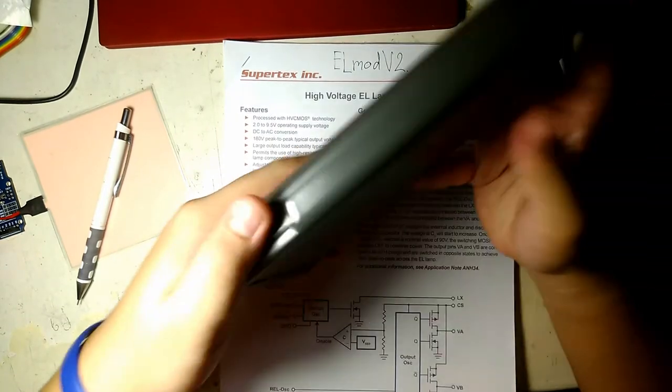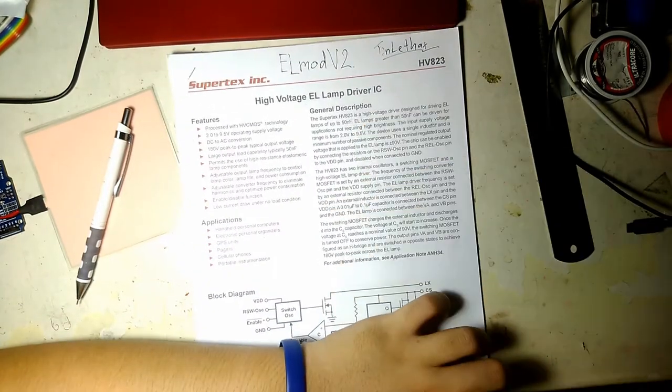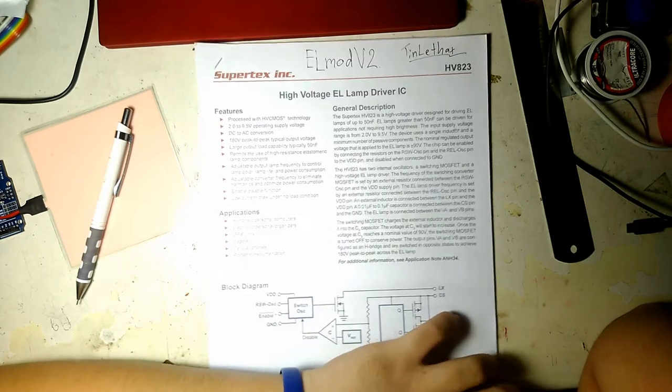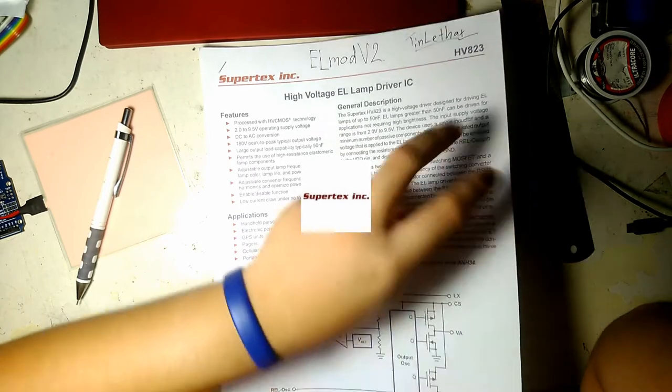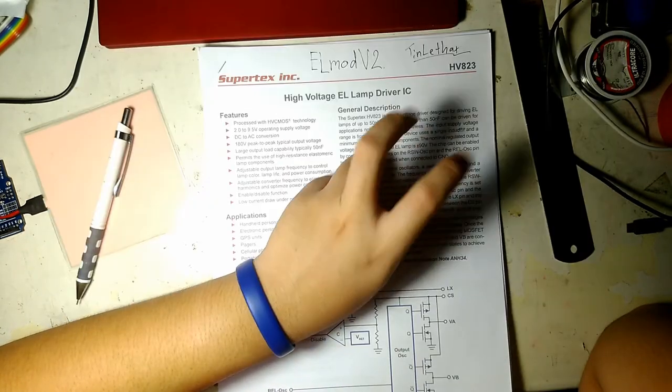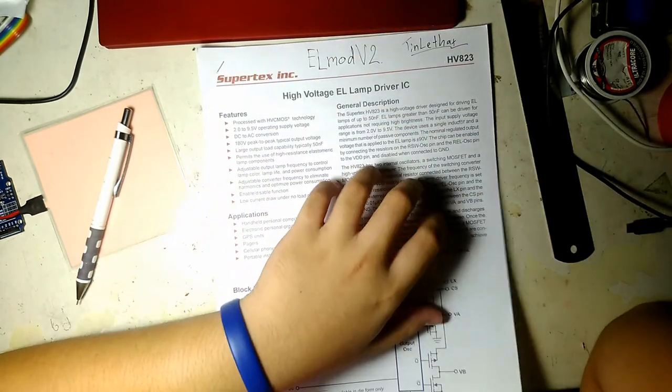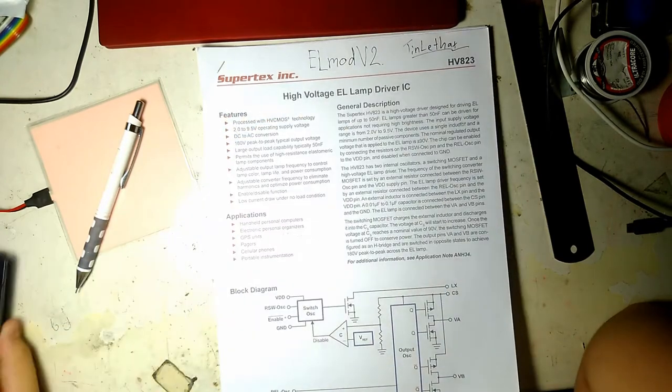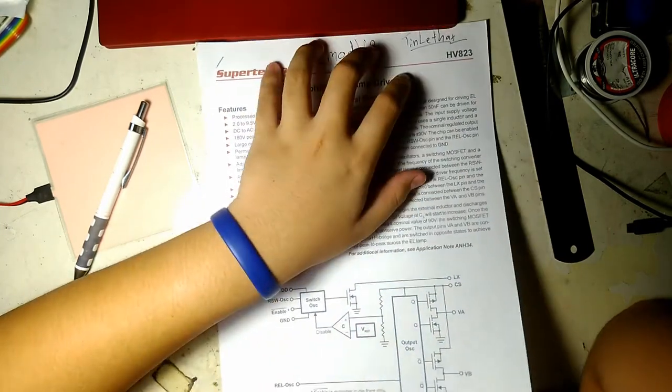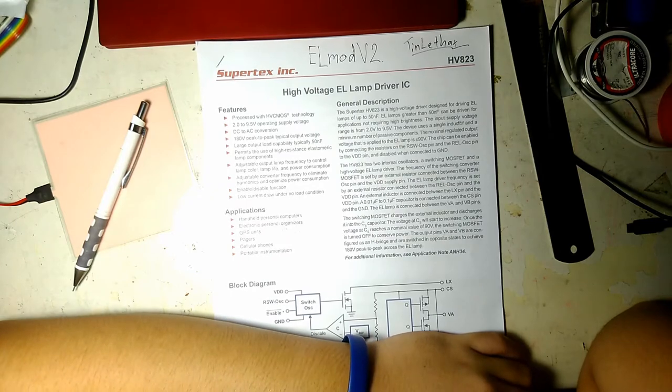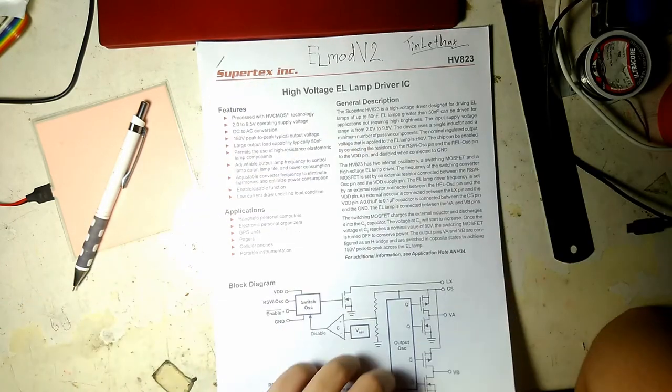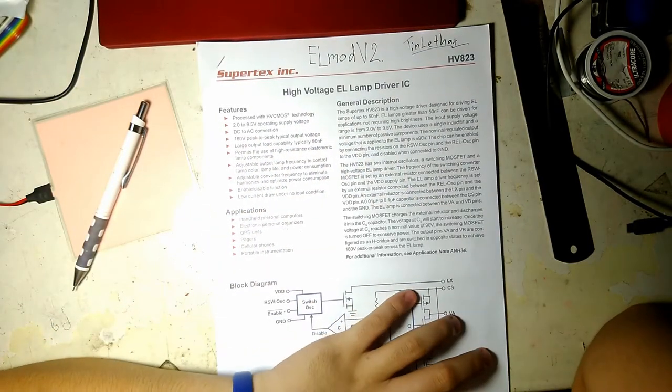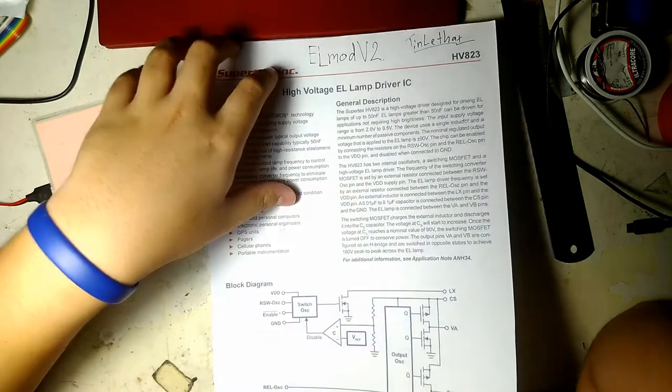But before we do that, let's take a look at the datasheet of the driver IC. We have the HV-823 made by Supertex, aka Microchip, that made the very popular Arduino Uno.